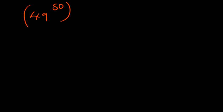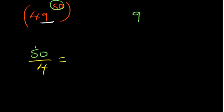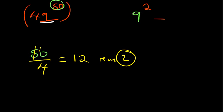To find the last digit of 49^50: take the last digit of the base, which is 9. Divide the power 50 by 4 — that gives 12 remainder 2. Now raise 9 to that remainder: 9² = 81. The last digit is 1. So the last digit of 7^100 is 1. That's how you find the last digit using modular arithmetic.